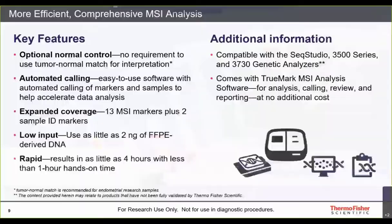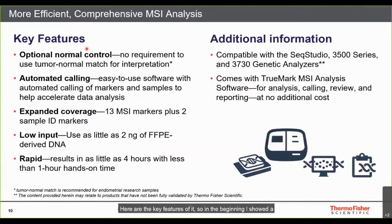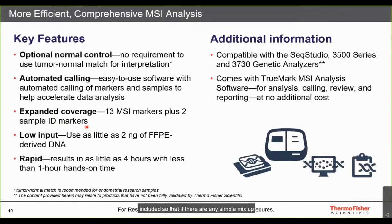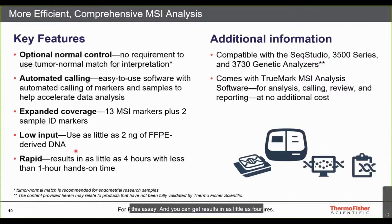Key features of the TrueMark MSI kit: you don't have to run a normal control, but you can. After fluorescent PCR, you import the capillary electrophoresis file into our software for automatic MSI calling. The kit has 13 MSI markers — eight more than the predominant assay on the market — plus two sample identification markers, PentaD and TH01. You only need two nanograms of FFPE DNA, results in as little as four hours with less than one hour hands-on time.